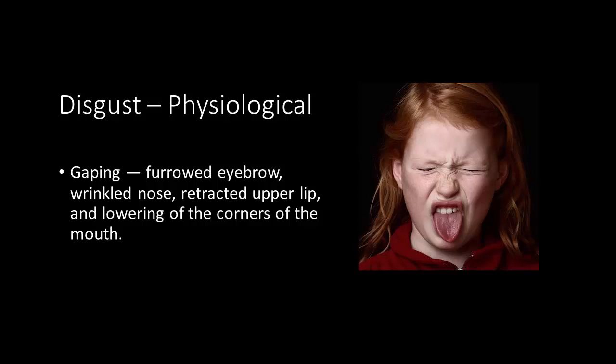Disgust is particularly recognizable for its well-defined facial expression called gaping, which we see across different cultures. Gaping involves the furrowed eyebrow, wrinkled nose, retracted upper lip, and lowering of the corners of the mouth. Gaping may even include the classical tongue extension, which has actually been observed across a number of animals, including birds and mammals. The reason for such a distinctive physiological expression of disgust is evolutionary and biological. At its root, disgust is a defensive response, originally associated with the sense of taste to reject or eject offensive-tasting foods or other substances from the mouth and/or stomach. This protects animals from ingesting potentially harmful substances, promoting disease and toxin avoidance.